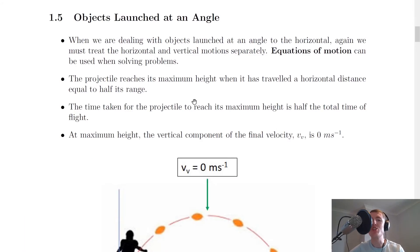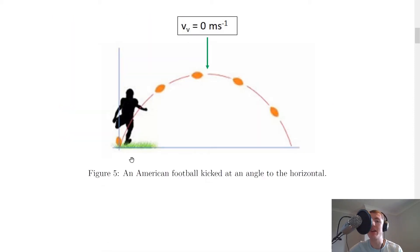So it says here that the projectile reaches its maximum height when it has traveled a horizontal distance equal to half its range. So if we imagine this picture here with the American footballer kicking the American football at an angle, then halfway through its motion it's going to have reached its maximum height and at this point the ball has traveled half its range because its full range would be all the way along to where the ball hits the ground.